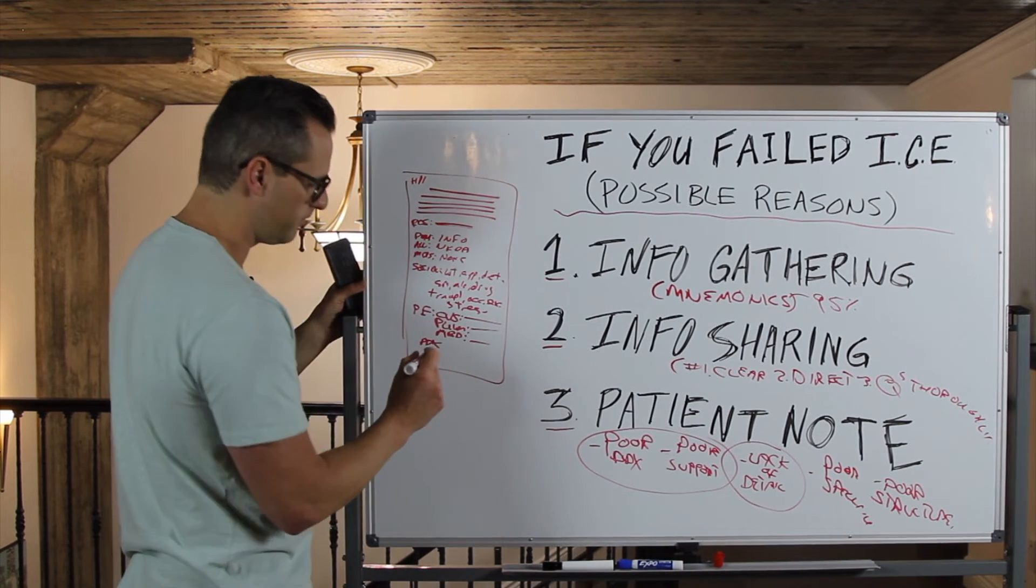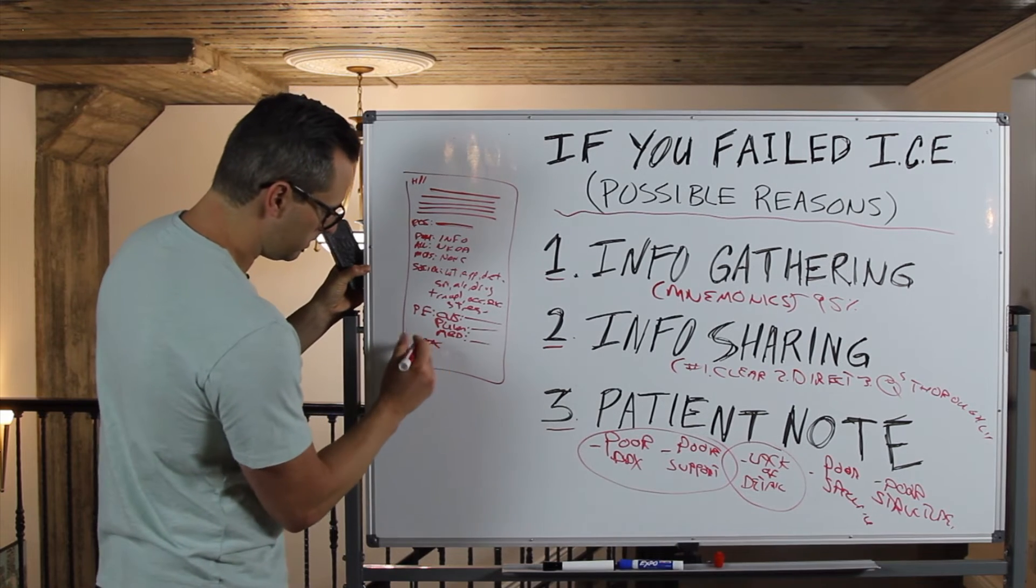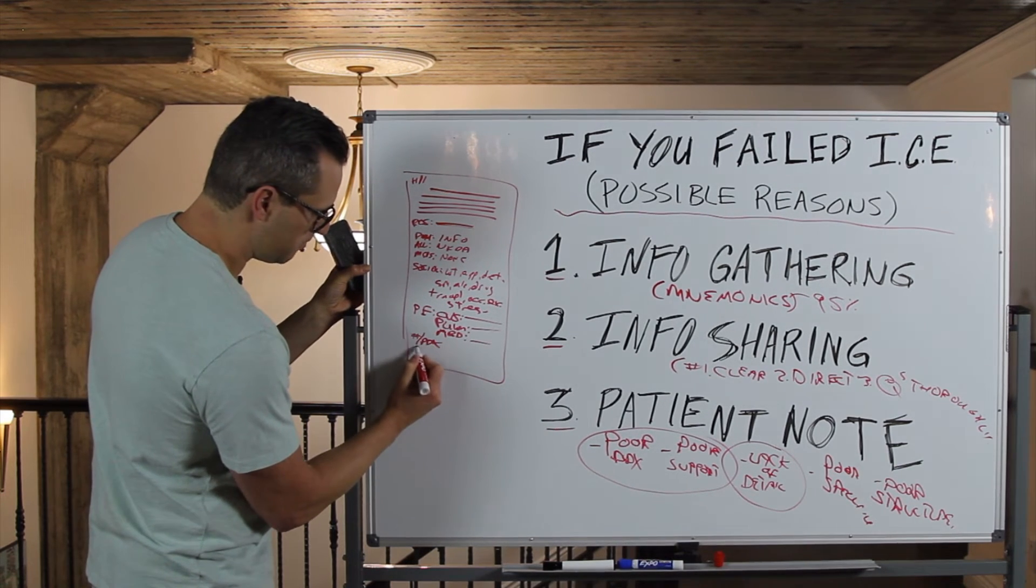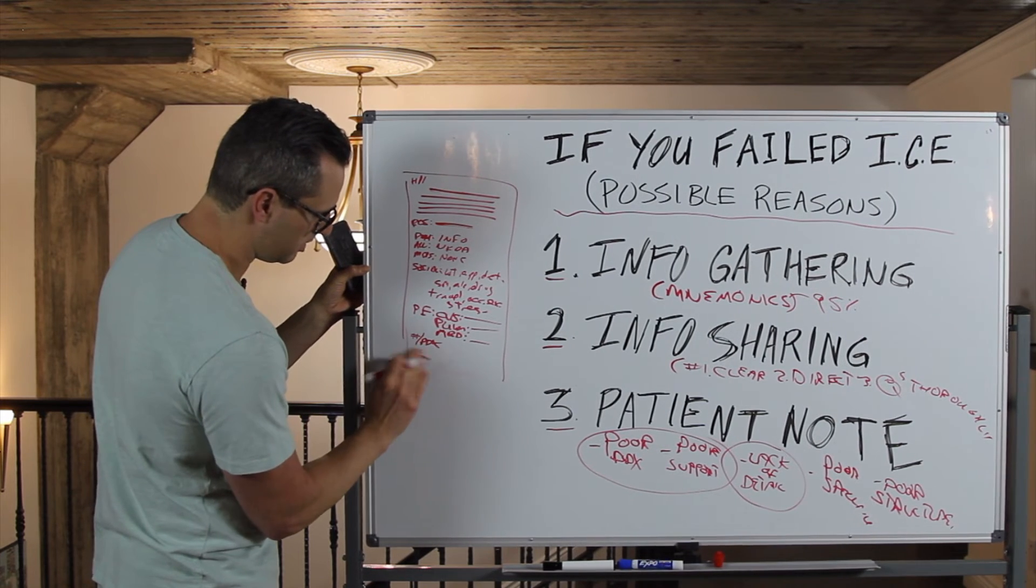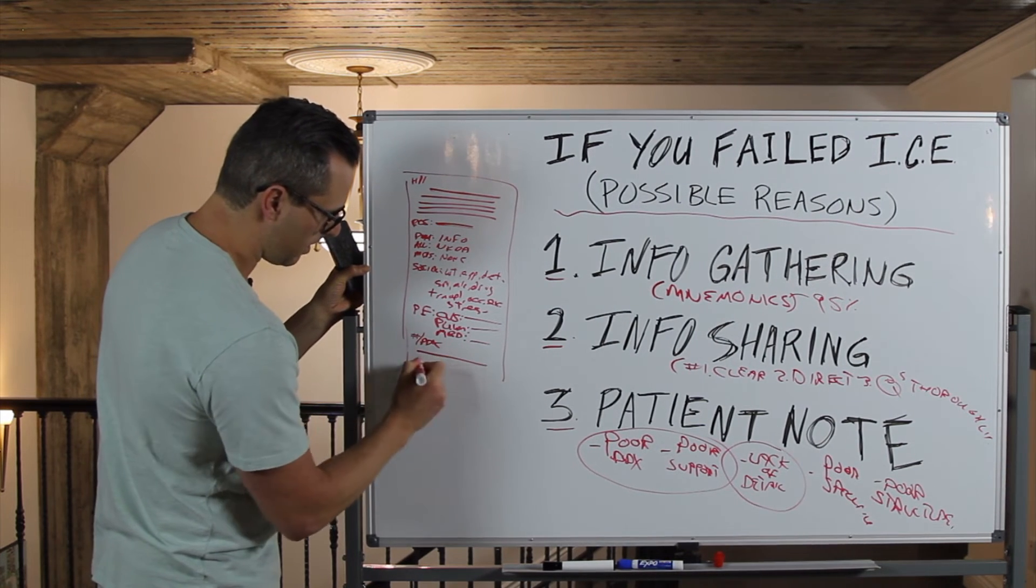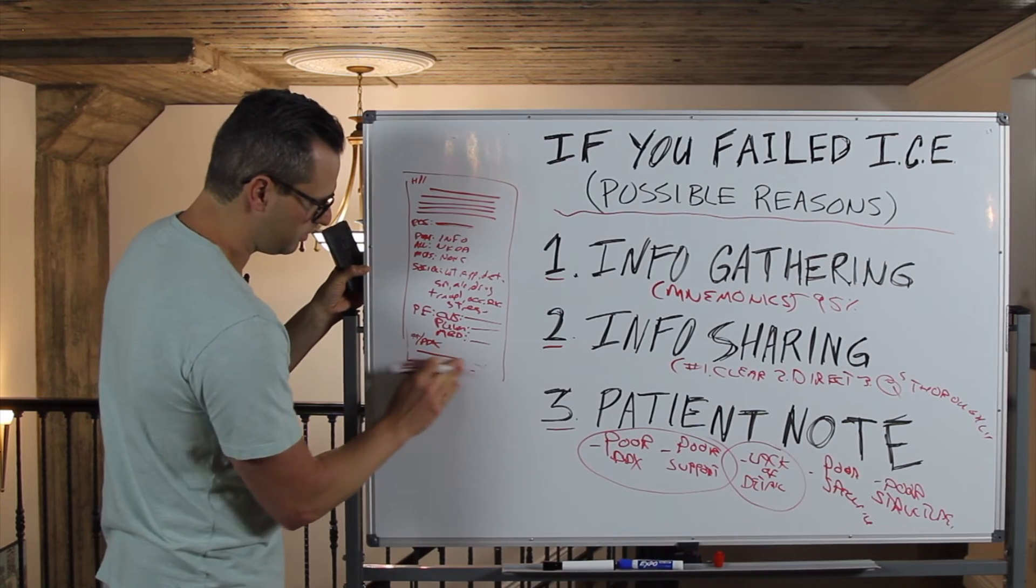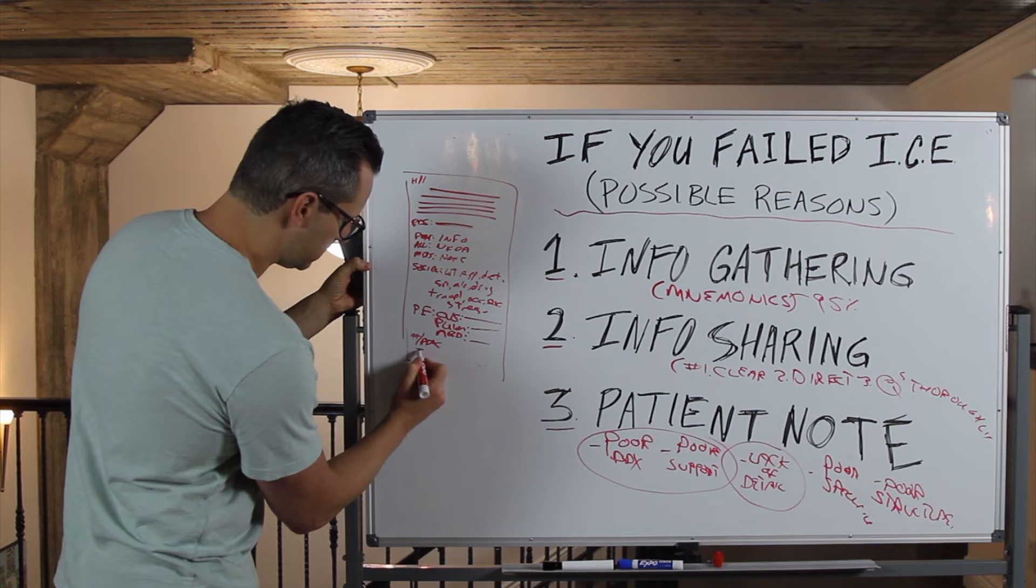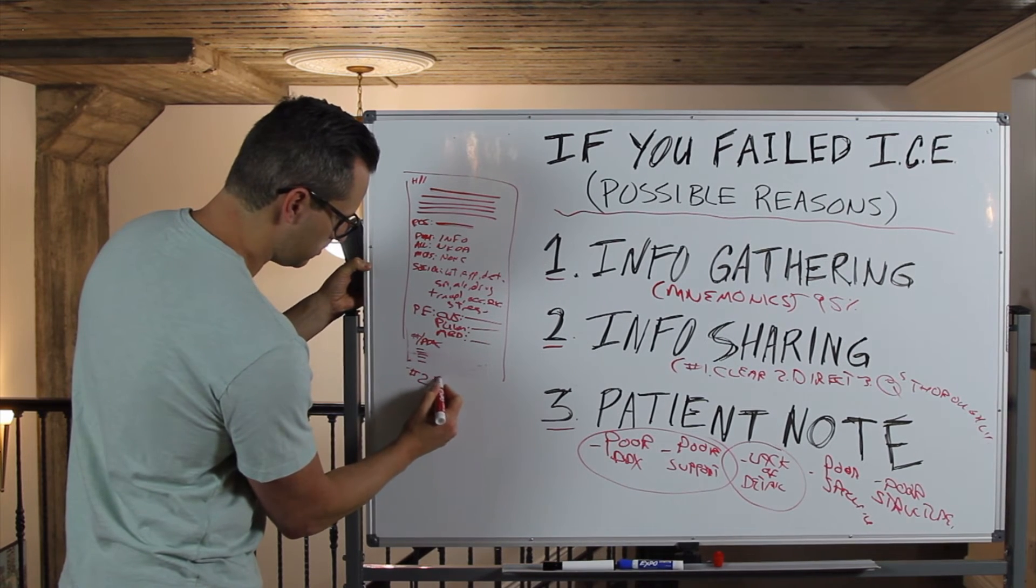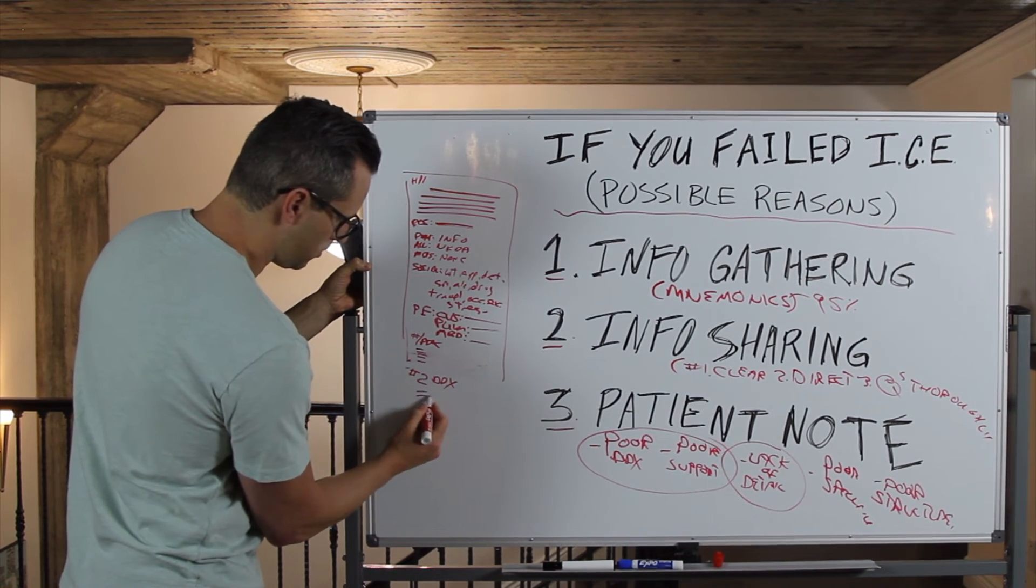Then you have your differentials. The way I recommend you do differentials is by putting the differential. So let's say we have differential number one, and then you put your support under in bullet points, okay? Some students, what they'll do is they'll write the differential and then write out lines of information. You could do that, but I recommend you just do this. Make it super easy for them to see what you're doing.